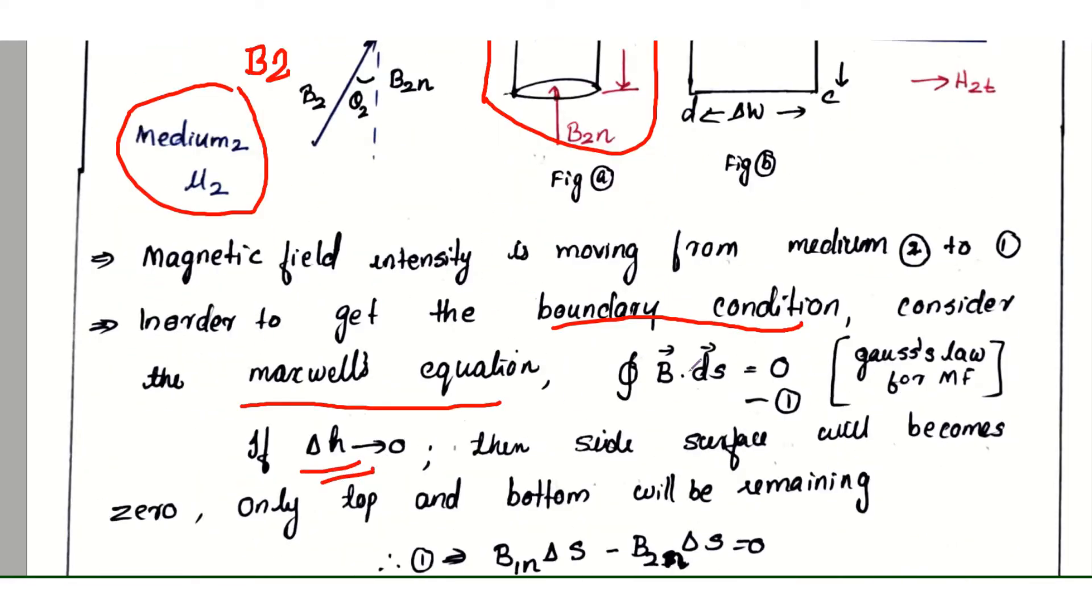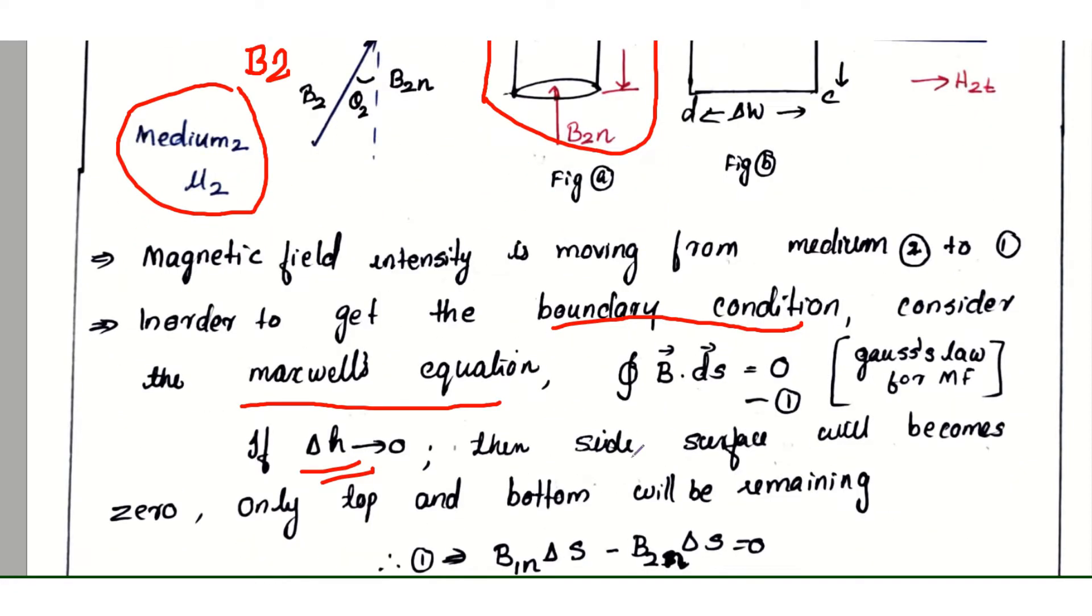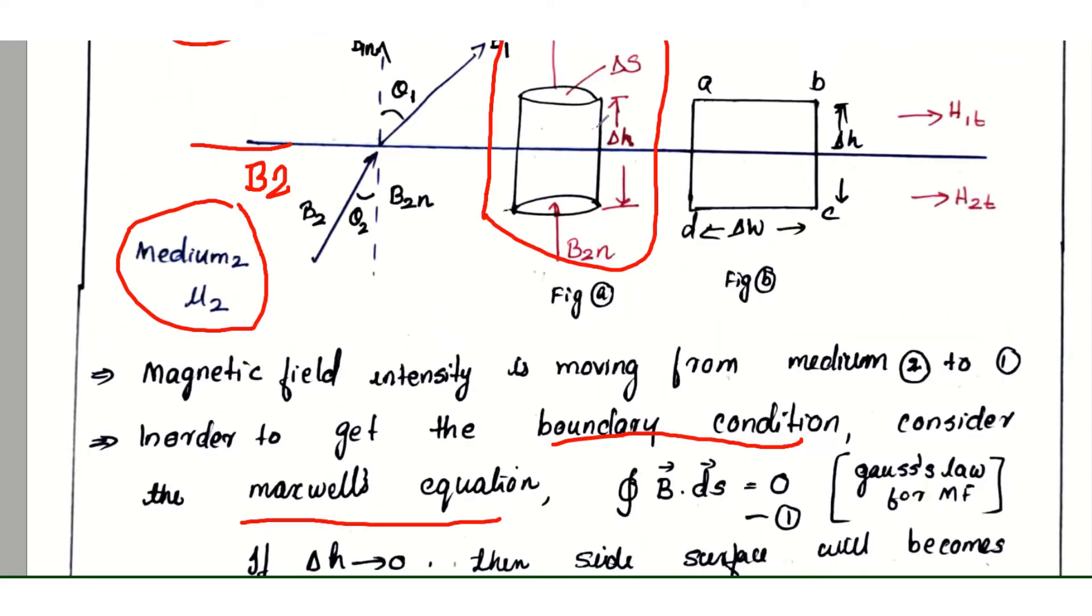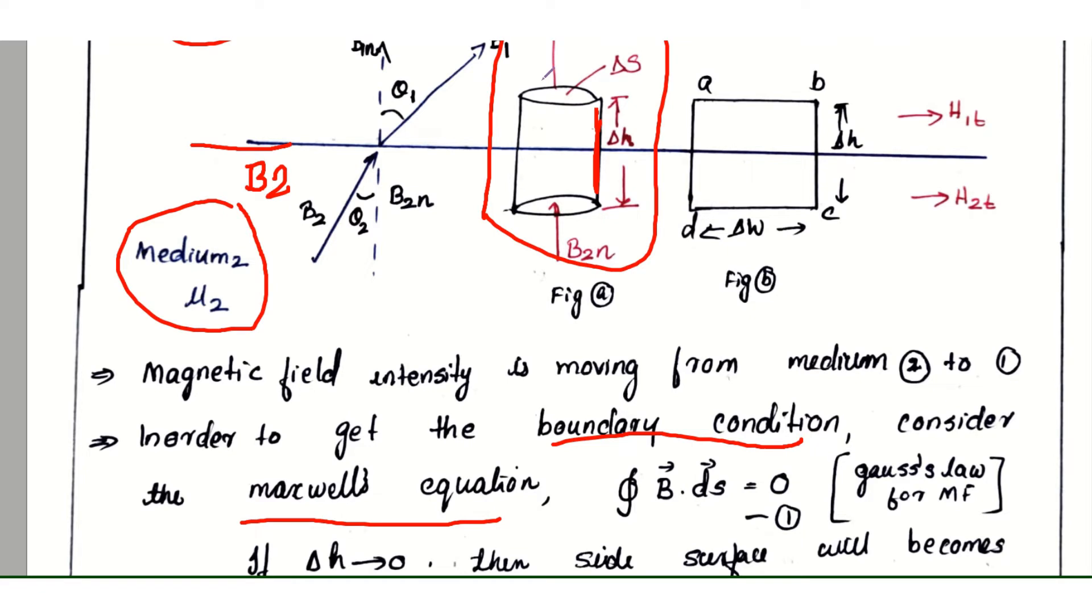If Δh → 0, then the side surface will become zero. Only top and bottom will be remaining. The top portion and bottom portion will exist.